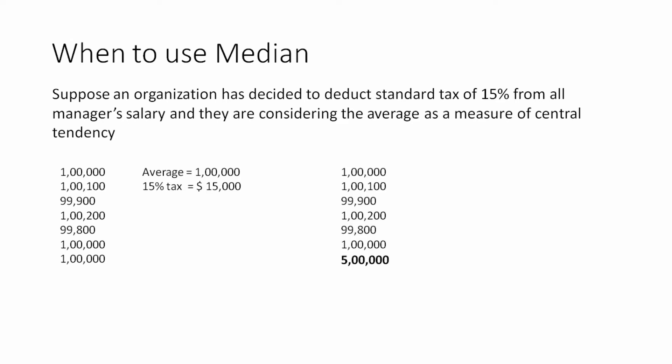Let us consider that there is a salary of a senior manager which gets added into this salary. And that salary is $500,000. Now the average will come out to be $157,143. And 15% of that would be $23,571, which is way higher than $15,000. If we use mean as central tendency value, then managers have to pay extra tax.